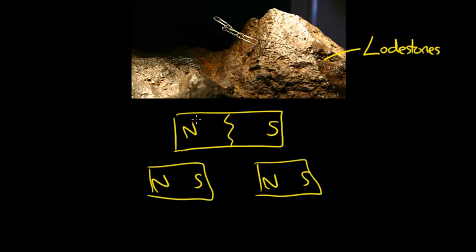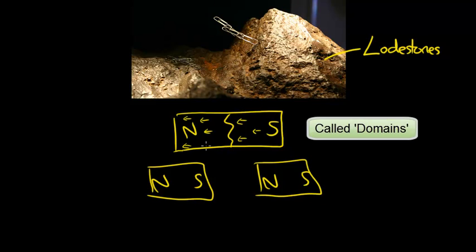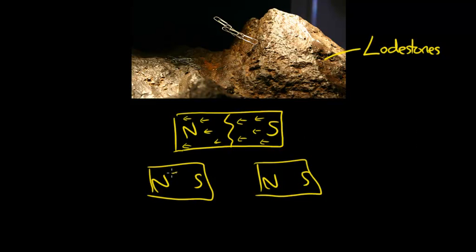And you can think of all of these electron spins which create the original magnet. We call them domains all pointing in the same way. When you break the magnet you find that the domains are still pointing in the same way, so we make two smaller magnets.